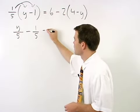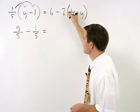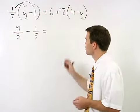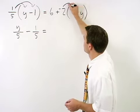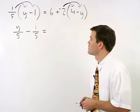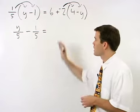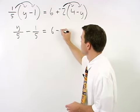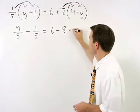On the right, let's change this minus 2 to plus a negative 2, so that we know we're distributing a negative 2 through the parenthesis. When we do that, the right side of the equation simplifies to 6 minus 8 plus 2y.